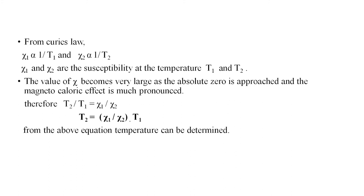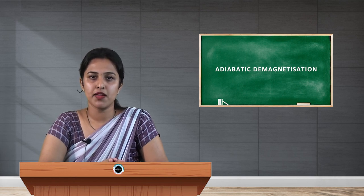From Curie's Law, the susceptibility is inversely proportional to absolute temperature. We can write χ₁ ∝ 1/T₁ and χ₂ ∝ 1/T₂, where χ₁ and χ₂ are the susceptibilities at temperatures T₁ and T₂ — the initial and final temperatures. The value of χ becomes very large as absolute zero is approached and the magnetocaloric effect becomes pronounced. Therefore, we can write T₂/T₁ = χ₁/χ₂, or rearranging: T₂ = (χ₁/χ₂) × T₁. From this equation the final temperature can be determined.